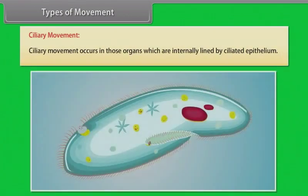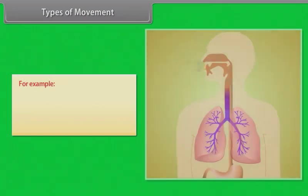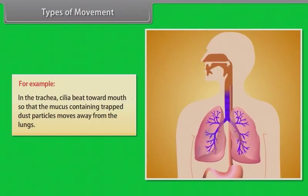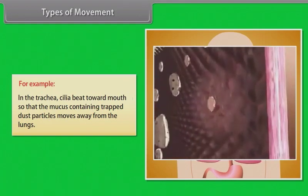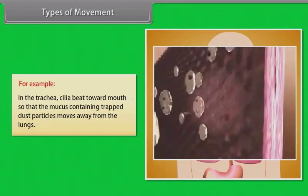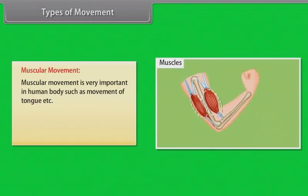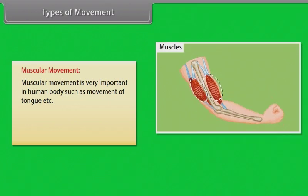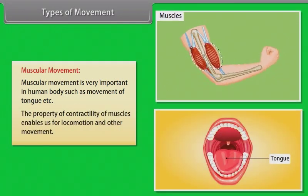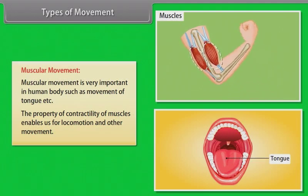Ciliary movement occurs in those organs which are internally lined by ciliated epithelium. For example, in the trachea, cilia beat towards the mouth so that the mucus containing trapped dust particles moves away from the lungs. Muscular movement is very important in the human body, such as movement of the tongue. The property of contractility of muscles enables us for locomotion and other movements.